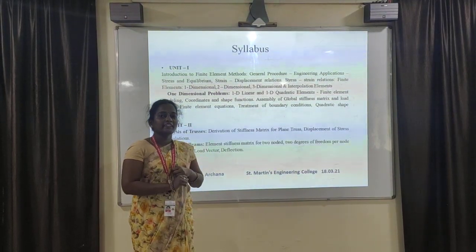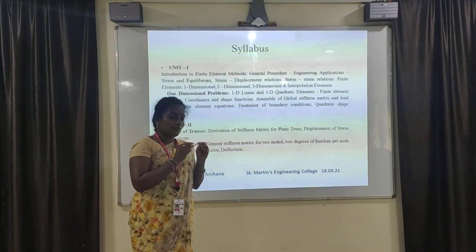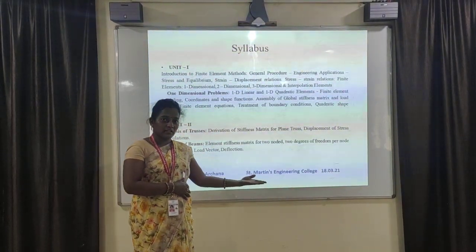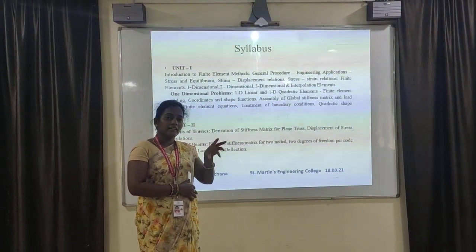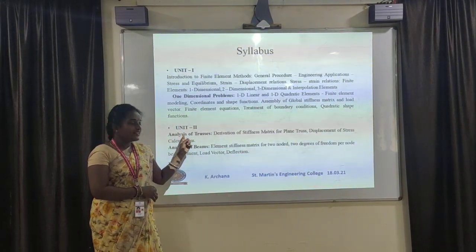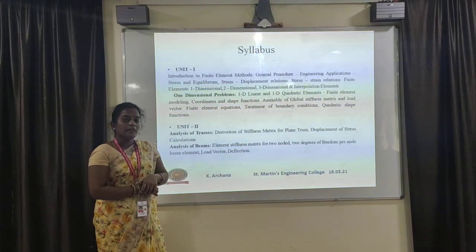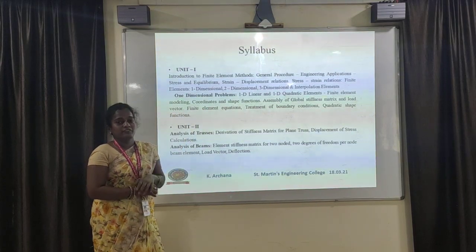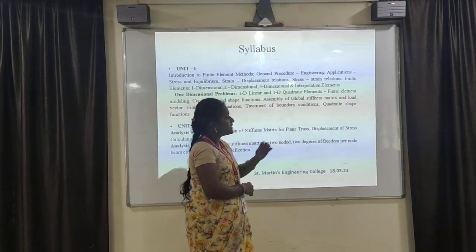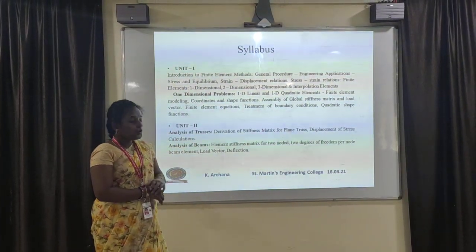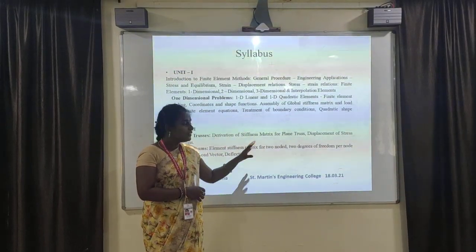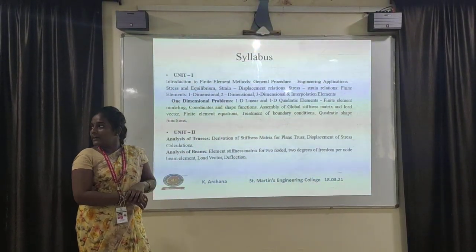In the first chapter we discussed the introduction to the finite element method — the procedure applicable in finite element methods, how to solve different problems like one-dimensional, two-dimensional and three-dimensional with quadratic functions and treatment of boundary conditions. The second chapter is the analysis of trusses and beams. The first part of unit two is the analysis of trusses, where we find out the derivation of the stiffness matrix — already discussed in the first chapter — derived here from plane stress, and the displacement and stress calculations.